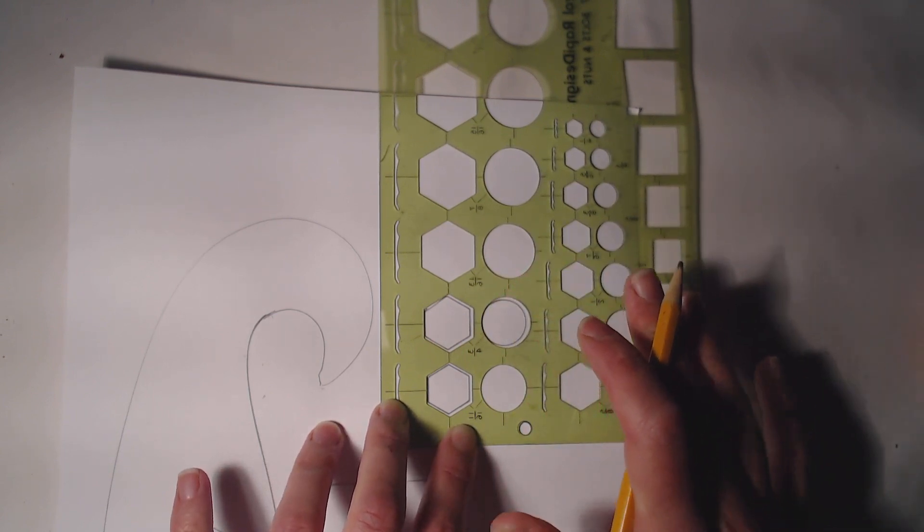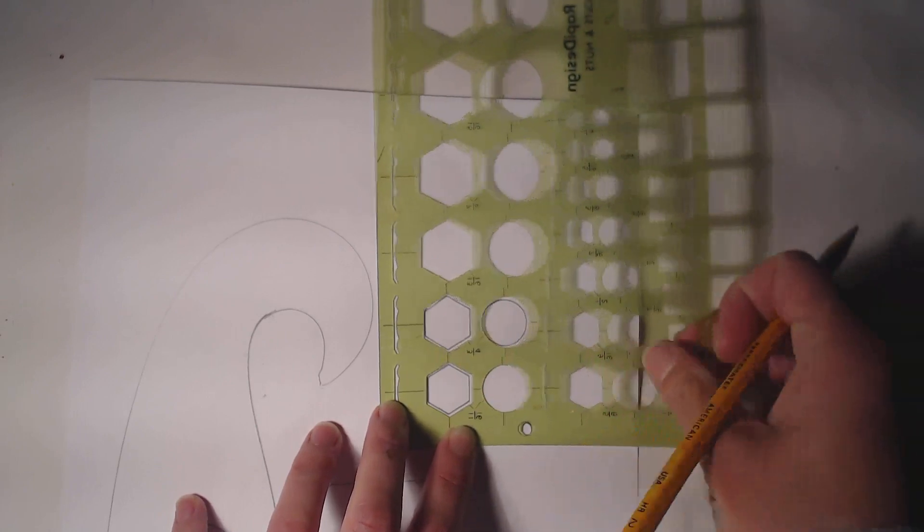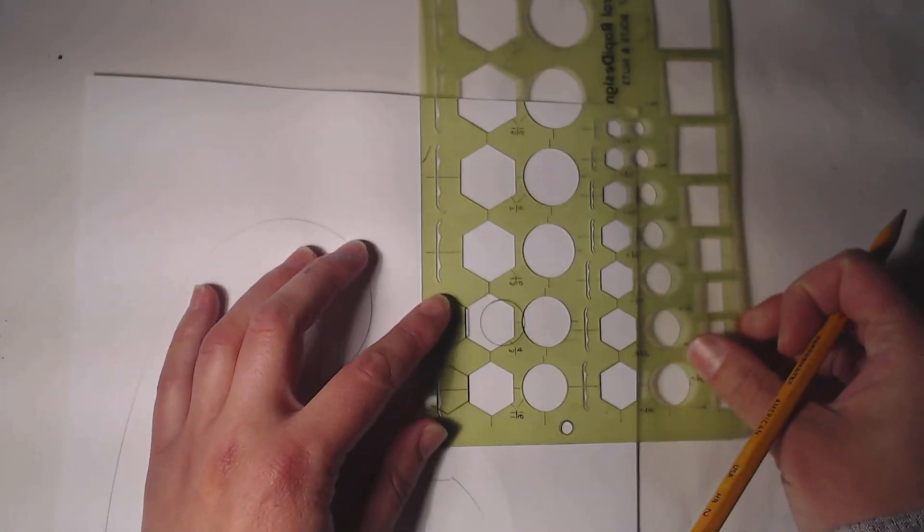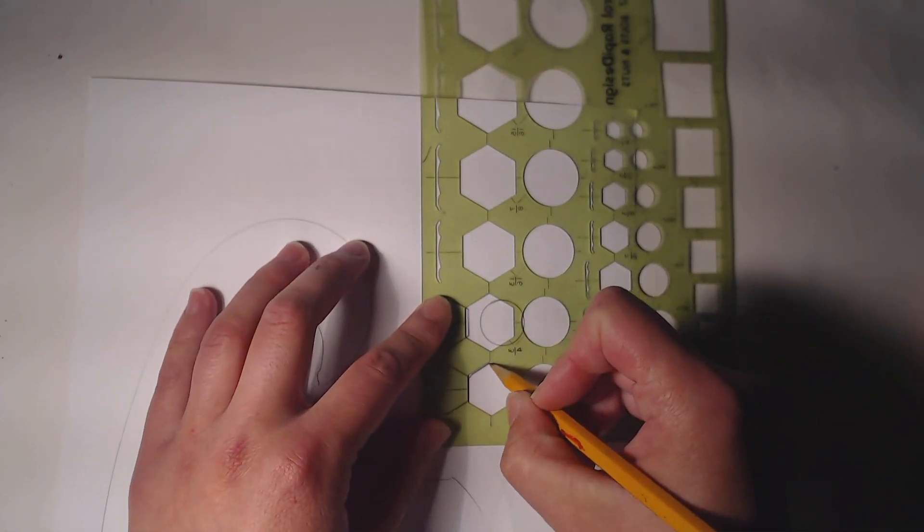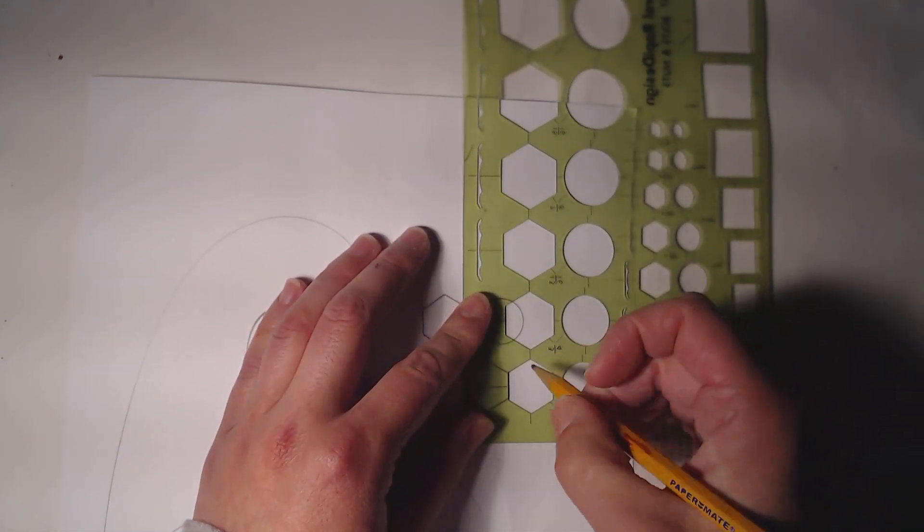Now, it might not be the most interesting thing if you keep your stencil in one spot and you trace all the shapes. So what you would want to do is you might have to move it around after every single one, and you can start to come up with something more interesting.